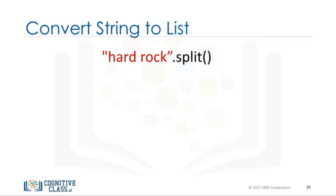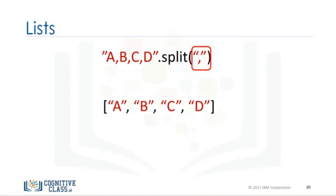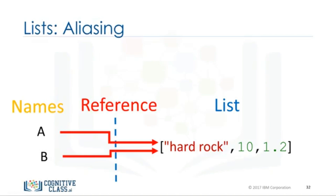We can convert a string to a list using split. For example, the method split converts every group of characters separated by a space into an element of a list. We can use the split function to separate strings on a specific character known as a delimiter. We simply pass the delimiter we would like to split on as an argument — in this case a comma. The result is a list. Each element corresponds to a set of characters that have been separated by a comma. When we set one variable B equal to A, both A and B are referencing the same list. Multiple names referring to the same object is known as aliasing.